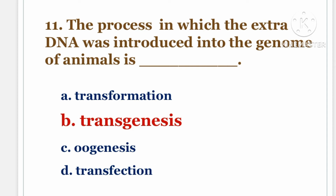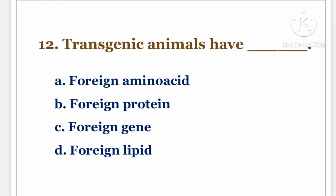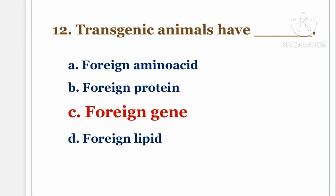Next question. Transgenic animals have DASH. The options are A. foreign amino acid, B. foreign protein, C. foreign gene, D. foreign lipid. The answer is C. Foreign gene.